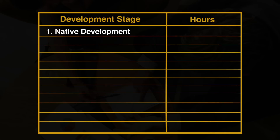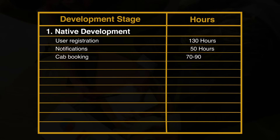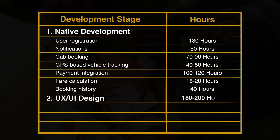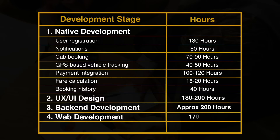Now I will tell you the development time required to build a taxi app. For native development on Android and iOS: user registration and login page and user profiles — 130 hours; notifications — 50 hours; car booking — 70 to 90 hours; GPS-based vehicle tracking — 40 to 50 hours; payment integration — 100 to 120 hours; fare calculation — 15 to 20 hours; booking history — 40 hours; UI and UX design — 180 to 200 hours; back-end development — up to 200 hours; web development and admin panel — 170 hours; testing and quality assurance also included.